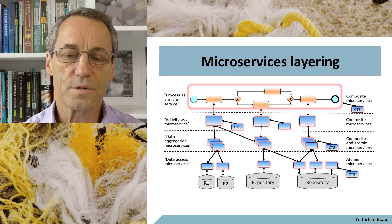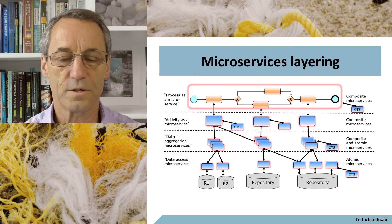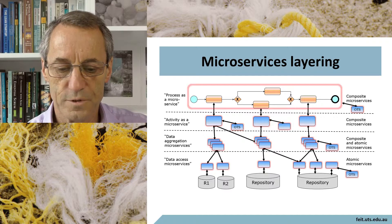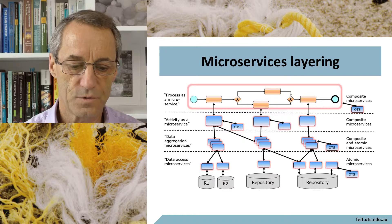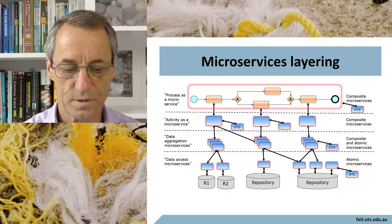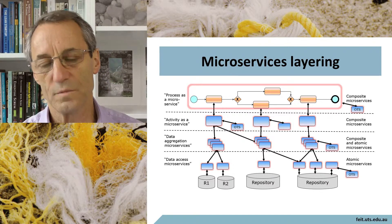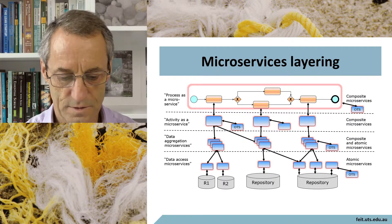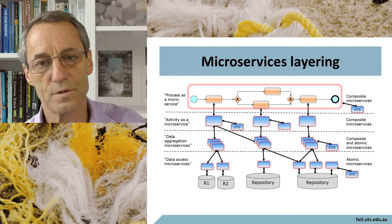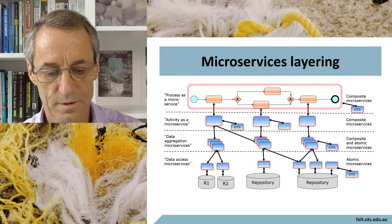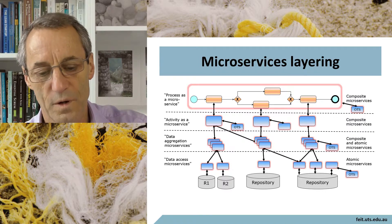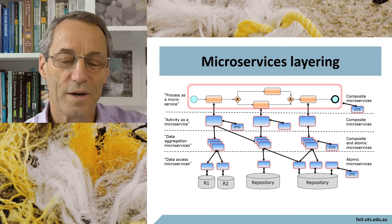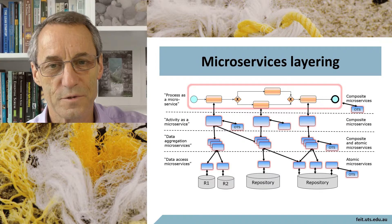Microservices architecture tends to necessarily result in a layered architecture, and fairly strict layering at that. In this diagram, we have the process as a macroservice, realized through the coordinated effort of one or more microservices. Those microservices may need to call on data aggregation microservices, which call on various data services, which in turn call on data access microservices that may call on several different independent databases. So we have this fanout of microservices as described.